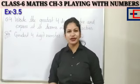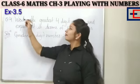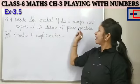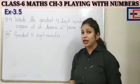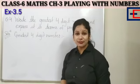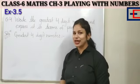That is question number 4 of exercise 3.5. Write the greatest 4 digit number and express it in terms of prime factors. First, we have the greatest 4 digit number. What is the greatest 4 digit number? 9,999.